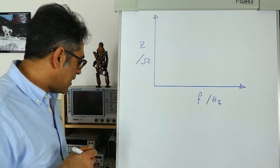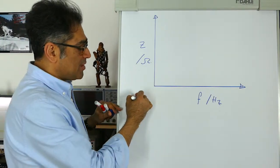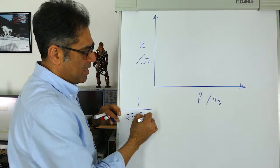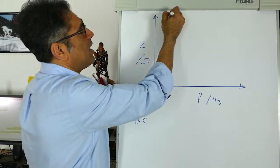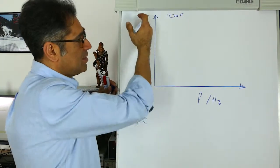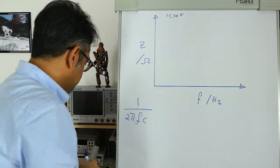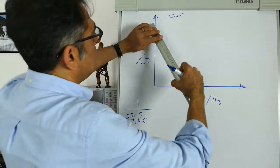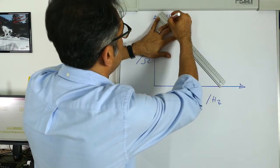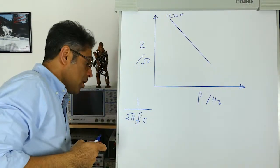Imagine you've got a capacitor — that's going to be your filter capacitor. We know that the impedance of the capacitor is going to fall at the rate of 1 over 2πFC. For simplicity, let's say I have a 10 nanofarad capacitor. This is the frequency axis and this is the impedance axis. If I plot the impedance of the capacitor, as the frequency increases it is going to fall like so.